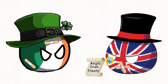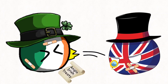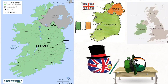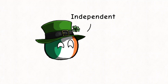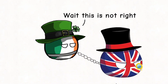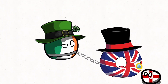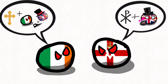The Anglo-Irish Treaty of 1921 was signed between the Irish and British governments, creating two separate entities: the largely Catholic Irish Free State, which had limited autonomy but remained part of the British Empire, and Northern Ireland, which remained part of the United Kingdom and had a Protestant majority. This division of the island was largely based on religious and political differences.